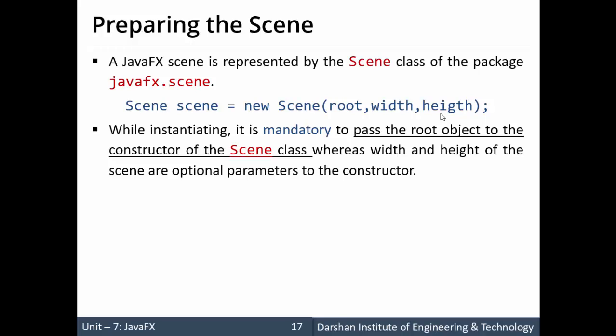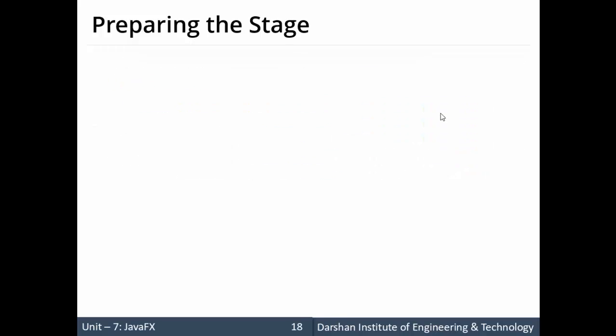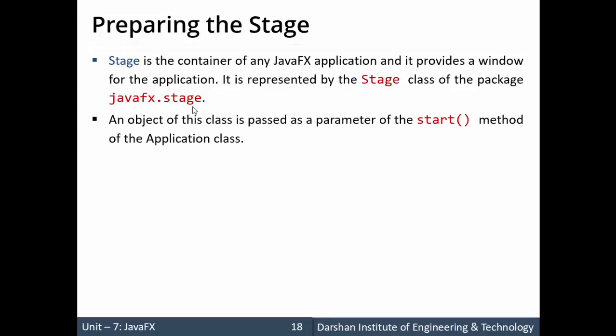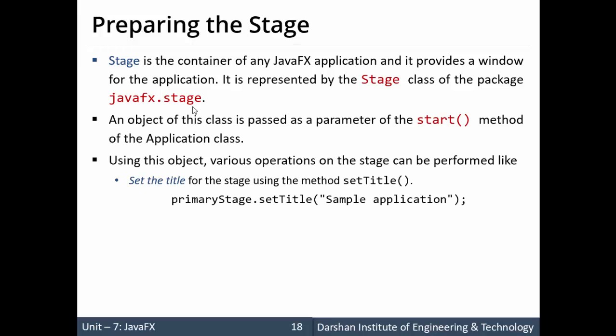The last step is to prepare the stage. To prepare the stage we add the scene to the Stage class. The Stage belongs to the package javafx.stage. We do not need to create a new Stage object because it is already instantiated as a parameter passed to the start method.